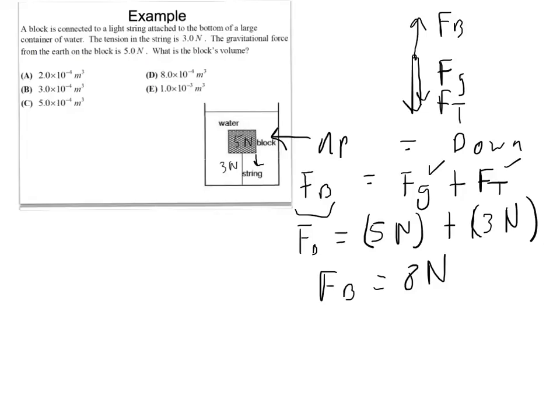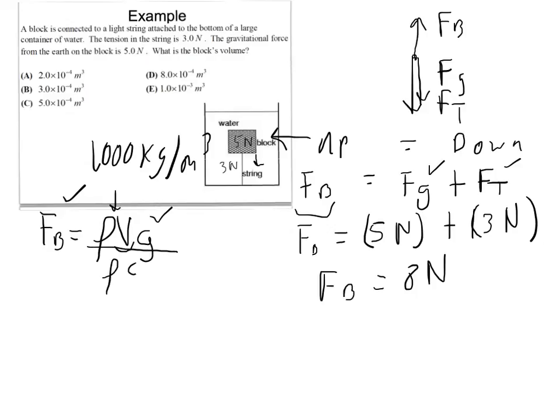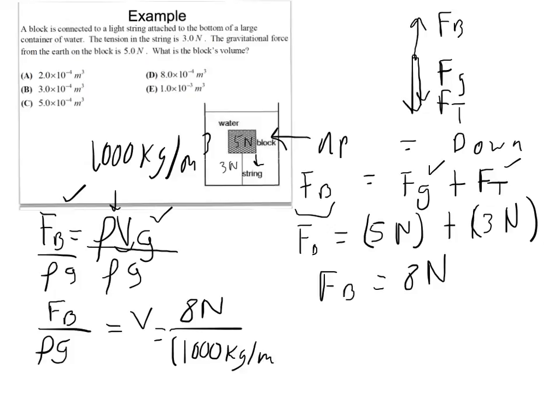And now we're asked to find this thing's volume. So now that I know the buoyant force, I'm going to think back to the buoyant force equation. Fb equals rho V times g. This is water. We learned its density the other day. If you don't remember it, it's 1,000 kilograms per meters cubed. We know the acceleration of gravity on Earth. We just found the buoyant force. We can find V. And if we solve very quickly for V, we can divide this side by rho g. We get Fb over rho g equals V. Now let's plug in 8 newtons over 1,000 kilograms per meters cubed times 10 newtons per kilogram. And we get the volume is 0.0008 meters cubed.